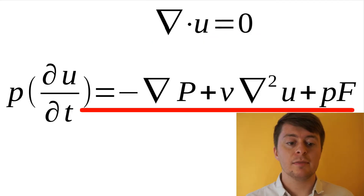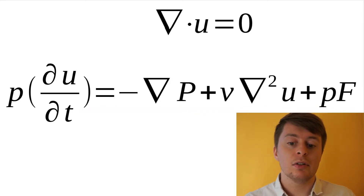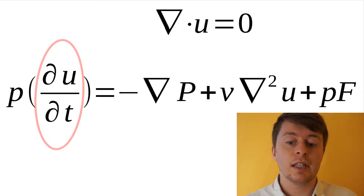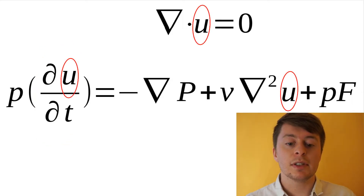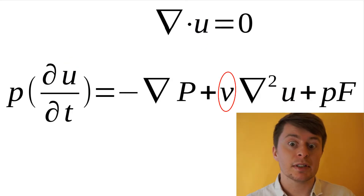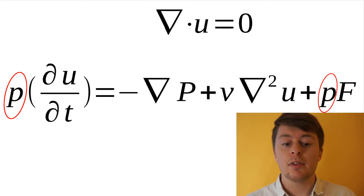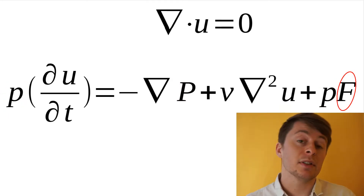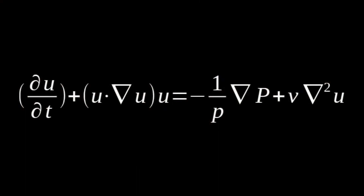The momentum equation is Newton's second law, which states mass times acceleration equals force. The term du/dt is the time-dependent velocity, u is the velocity term, v is the dynamic viscosity, rho is the fluid density, p is the pressure, and f is the force term. Combining these two equations forms a solution to solve viscous flow, which is the Navier-Stokes equation.